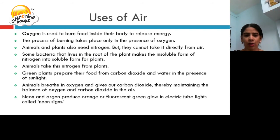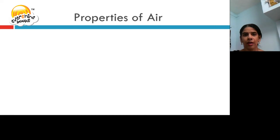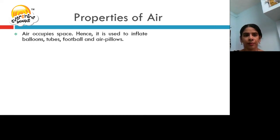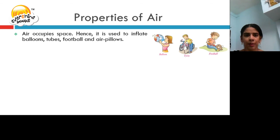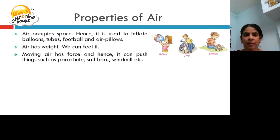Neon and argon produce orange or fluorescent green glow in electric tubes called neon signs. Air occupies space. It is used to inflate balloons, tubes or tires, footballs, and air pillows. Air has weight — we can feel it. Moving air has some force. It can push things such as parachutes, sailboats, windmills, etc.